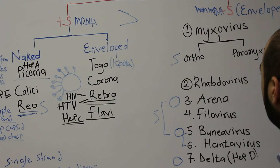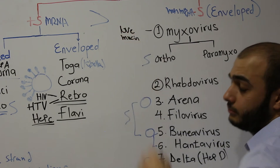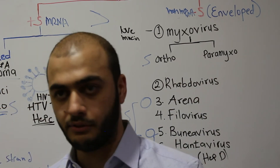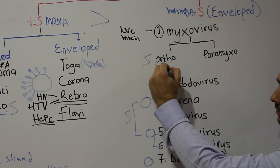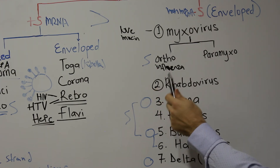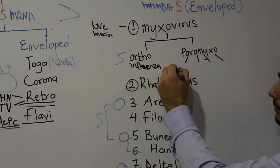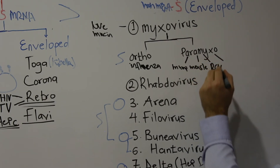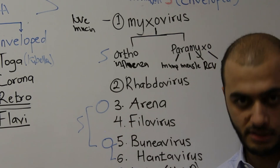Now for the negative-stranded RNA viruses. We begin with Myxoviridae — 'myxo' means mucus, so this family loves mucus, which exists mainly in the respiratory tract. Therefore, all Myxoviridae are associated with respiratory tract infections. It is divided into Orthomyxoviridae, which contains Influenza (types A, B, and C — to be discussed specifically later), and Paramyxoviridae, which contains Mumps, Measles, Respiratory Syncytial Virus, and Parainfluenza.